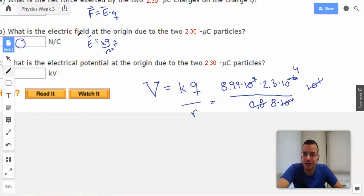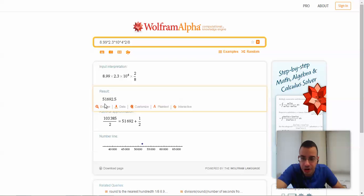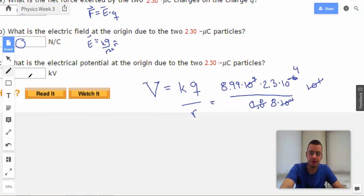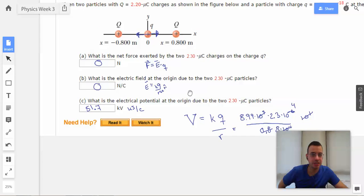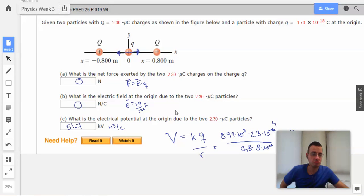We get... should be in kilovolts. 51.69, so I'll call it 51.7 kilovolts, or kilojoules per coulomb. Make sense? Good. On to the next one.